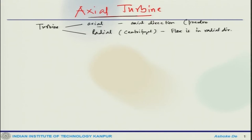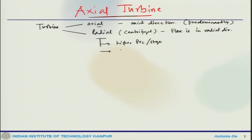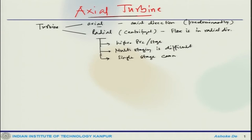The flow is predominantly in the axial direction. Now, radial turbine can provide higher pressure ratios per stage — like the centrifugal compressor it can provide higher pressure ratio per stage. That is one of the biggest advantages, but the bottleneck is that a single stage cannot handle high mass flow rate. Once your mass flow rate is high, the single stage would not be able to handle that.